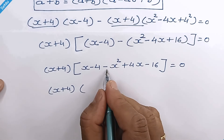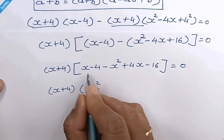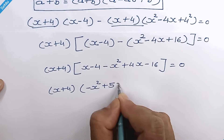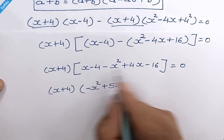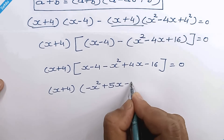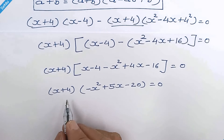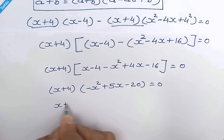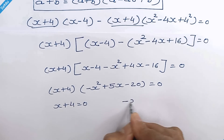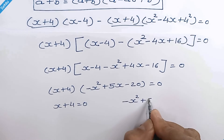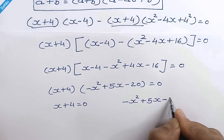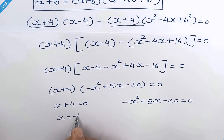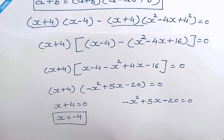Now here we have negative x squared, and x plus 4x will be 5x, and negative 4 minus 16 will be negative 20. From here we have two possibilities: x plus 4 is equal to 0, and negative x squared plus 5x minus 20 is equal to 0. So here we have x is equal to negative 4, and this is one answer.